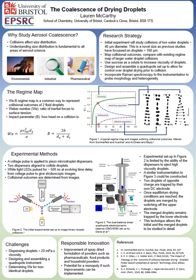Looking at the regime map here, the Weber number–impact parameter regime map is a common way to represent collisional outcomes of two droplets. The Weber number is a ratio of the fluid's inertial forces to its surface tension, and the impact parameter is a measure of how head-on the collision of the two droplets is.